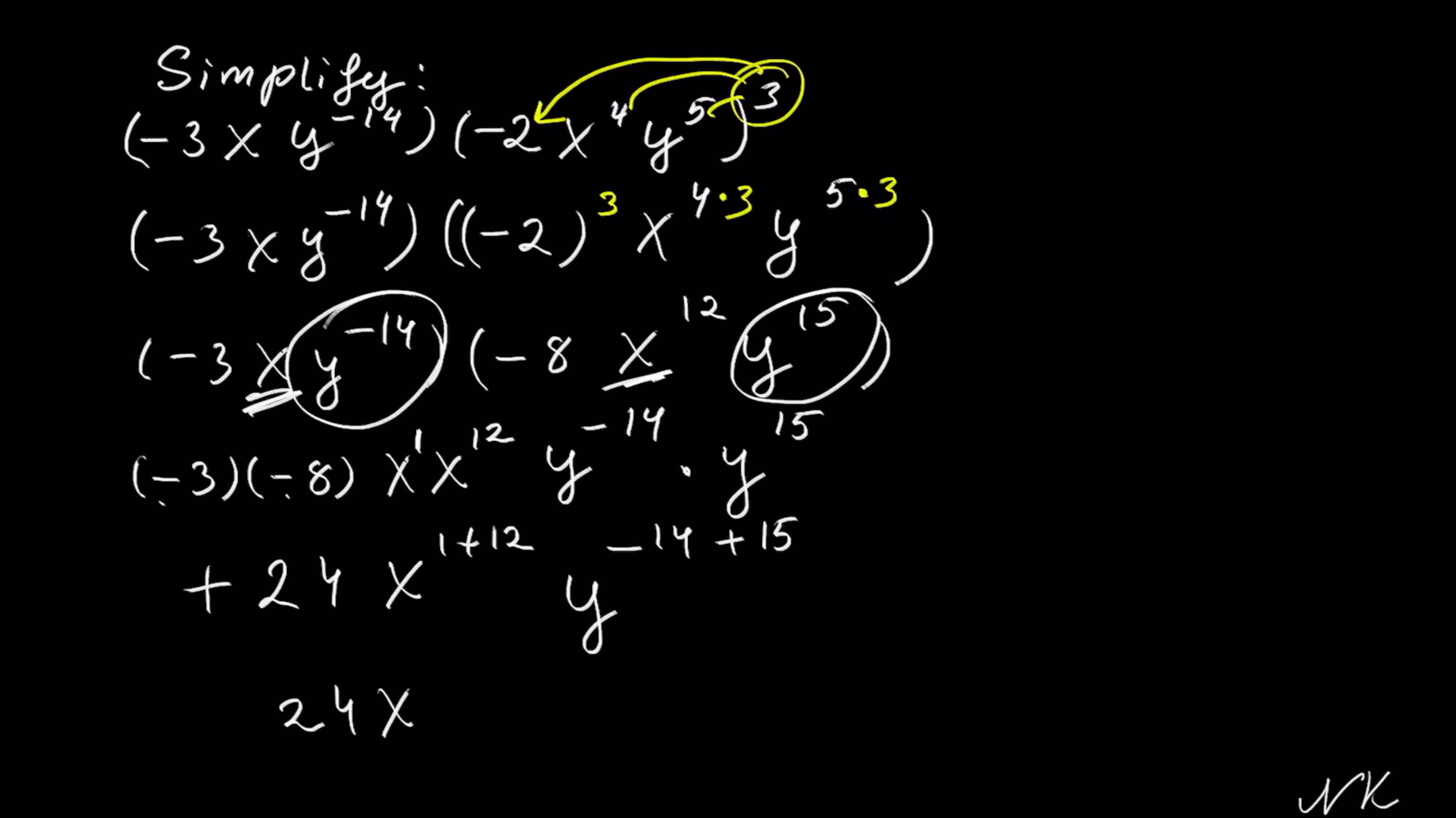X to the 1 plus 12 is 13, y to the negative 14 plus 15 is 1, so 24x to the 13th y is our solution. That's all.